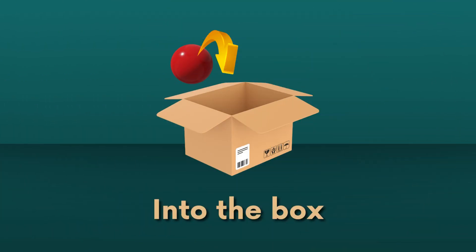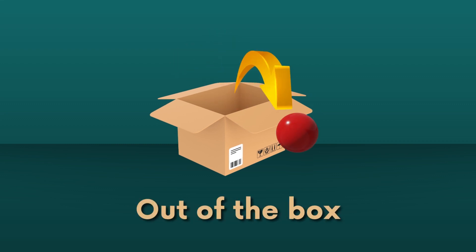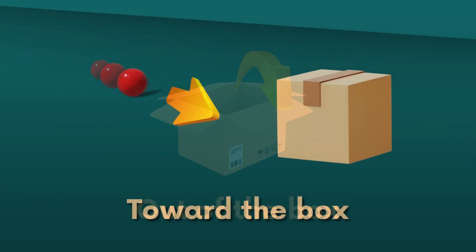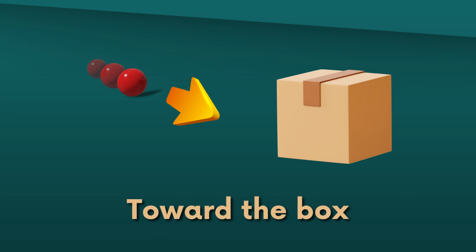The preposition 'into' indicates movement or entry inside an object or space. For example, 'the ball goes into the box.' The preposition 'out of' indicates movement or exiting from an object or space. For example, 'the ball comes out of the box.' The preposition 'toward' indicates movement in the direction of a particular object or location. For example, 'the ball moves toward the box.'